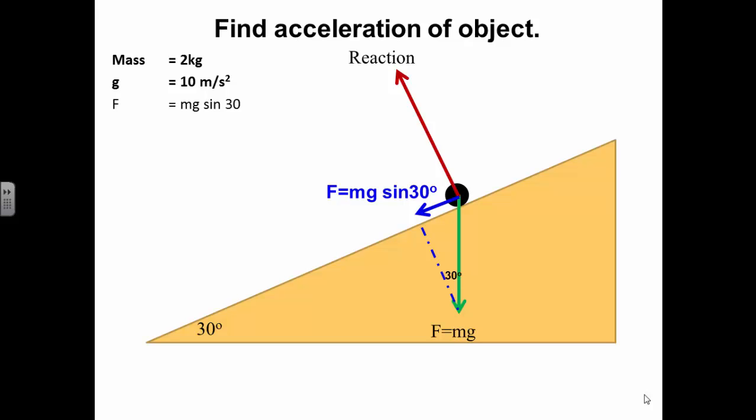So let's put these values in. 2 times 10 times sine 30 gives us 10 newtons. Now this unbalanced force will make this 2 kilogram mass accelerate. We use Newton's second law: F is equal to ma.